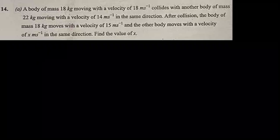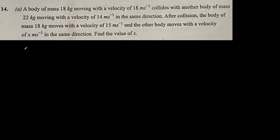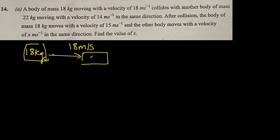Problem 14a: A body of mass 18 kg moving with a velocity of 18 meters per second collides with another body of mass 22 kg moving with a velocity of 14 meters per second. This 18 kg body goes this way at 18 meters per second just before collision, and there is another body, mass is 22 kg, and this body was already moving at 14 meters per second in the same direction.